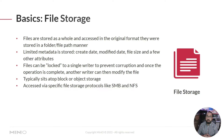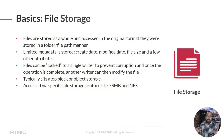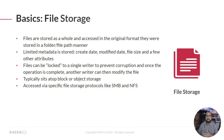Files can be locked to a single writer to prevent corruption, and once the operation is complete, another writer can modify that file. So if you're using file storage as a backing for writing a database, that file can be locked so another writer cannot write to that same database at the same time, preventing data corruption where two different devices or end users try to write to the same file simultaneously. Note that file storage typically sits atop block and object storage, and it's accessed via specific protocols like SMB or NFS. Think of these additional protocols as overhead, and we'll talk about that in the performance section later.